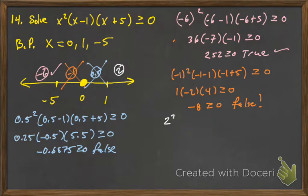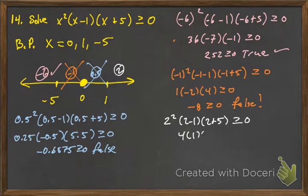Then finally we'll try 2: 2 squared times 2 minus 1 times 2 plus 5, greater than or equal to 0. So this is 4 times 1 times 7 — that's certainly going to be positive, so that is true.